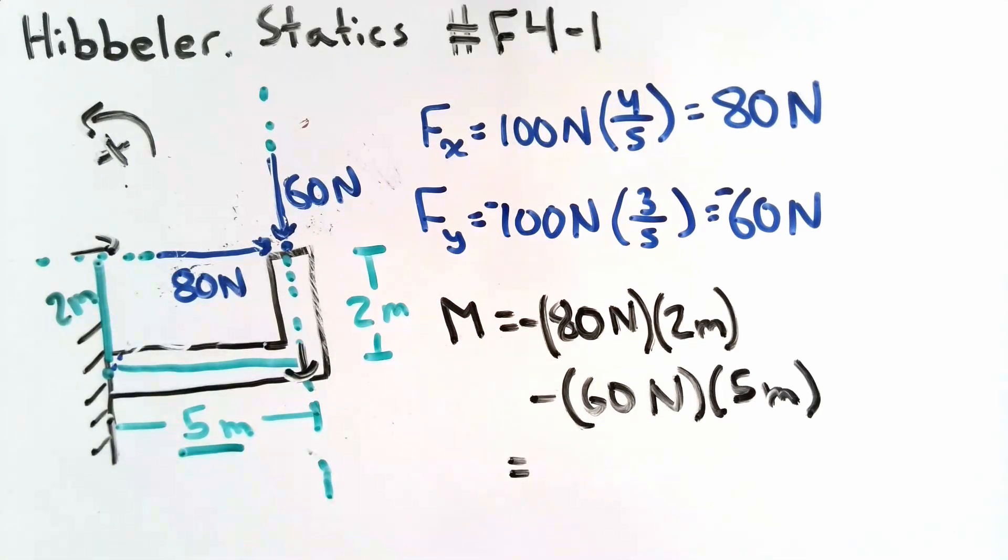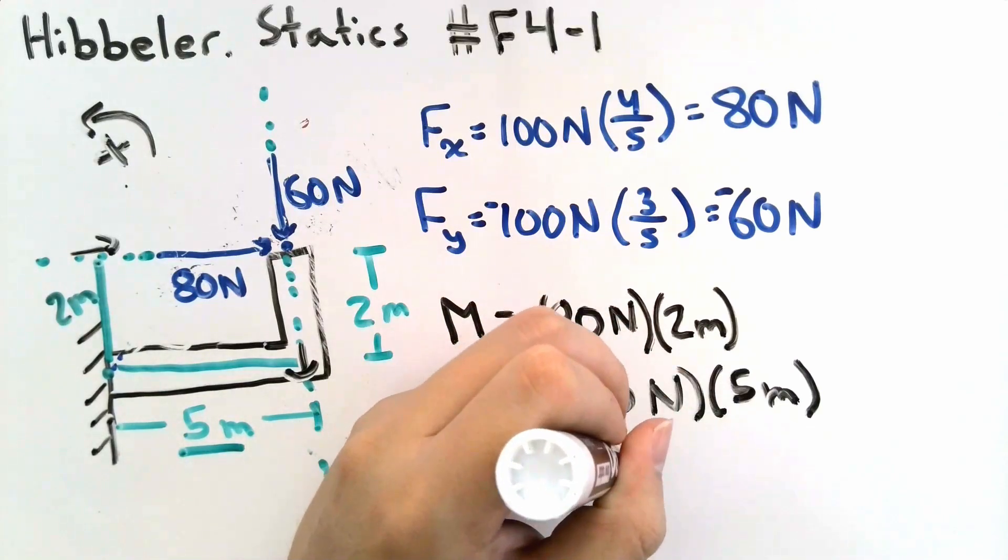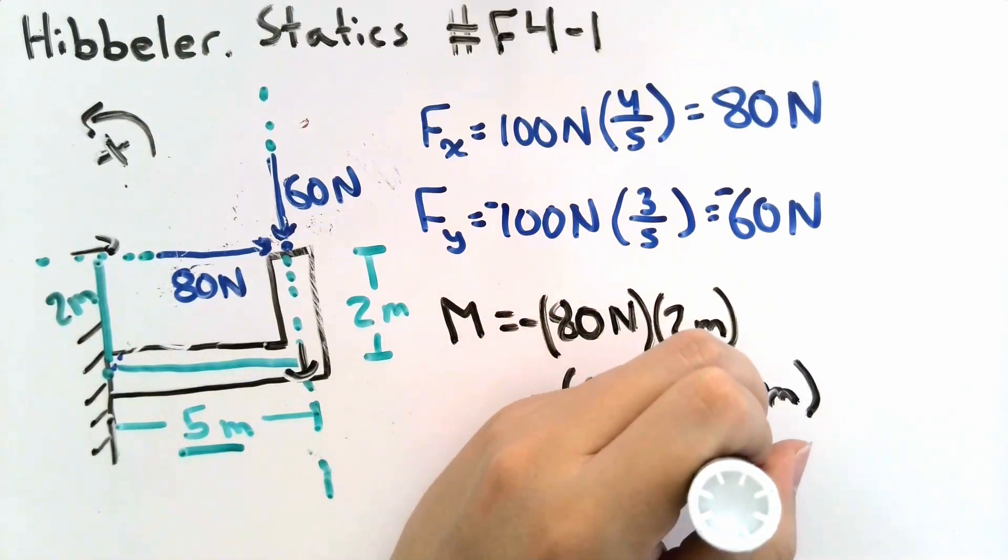Adding up the two individual moments would give us negative 80 N times 2 meters minus 60 N times 5 meters. That is equal to negative 460 N meters.